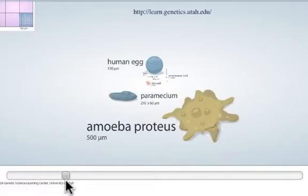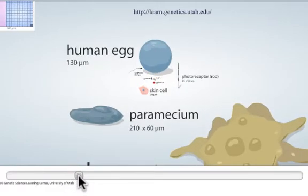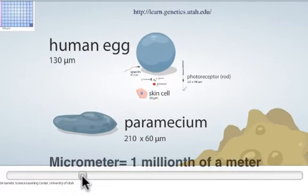Amoeba is a large single celled organism, about five hundred micrometers across. Paramecium is a little bit smaller, two hundred ten by sixty micrometers.